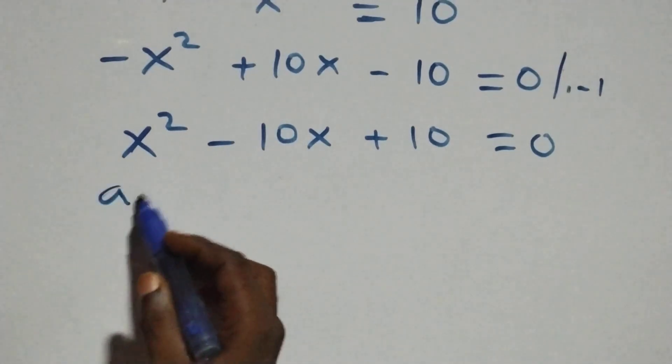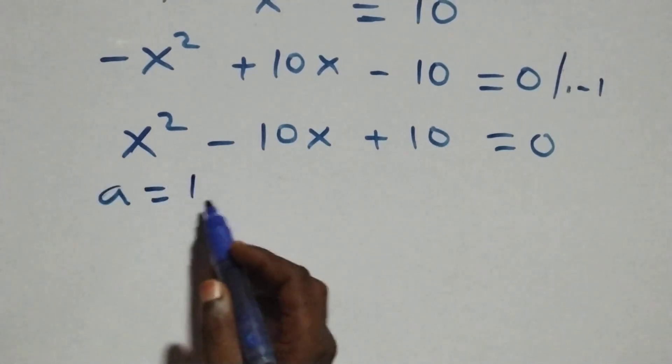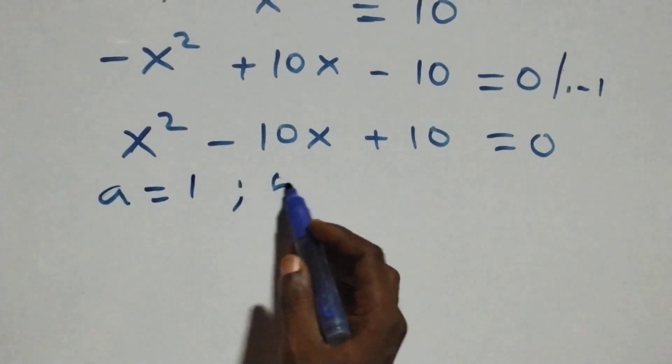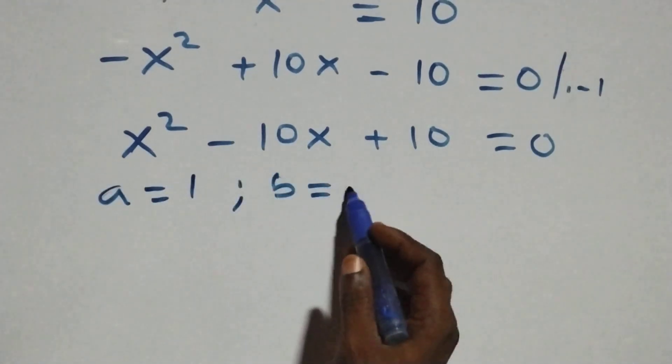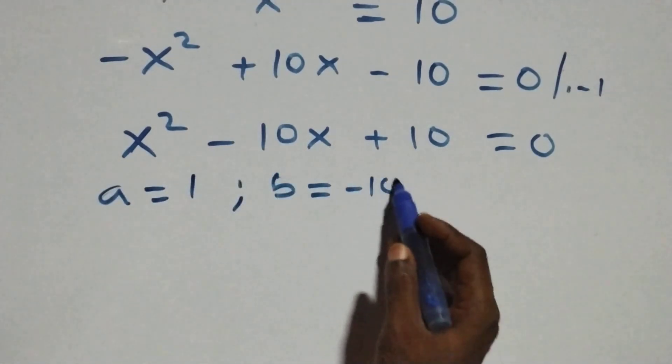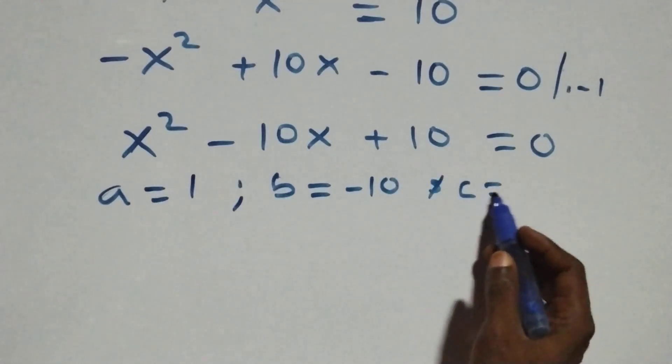From this quadratic equation, we identify the coefficients: a equals one, b equals negative ten, and c equals ten.